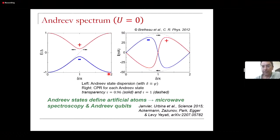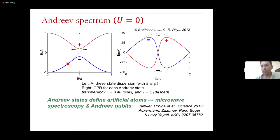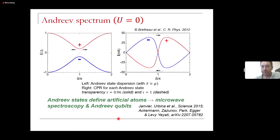On a more general note, Andreev states can be thought of as artificial atoms. Inside the gap you have well-resolved discrete energy levels at a given phase difference. You can tune these energy levels by changing the phase difference, and you can induce transitions between such levels by microwave spectroscopy. You can even build qubits out of them, and it has been shown that these have really long lifetimes and very good properties — so they might become a leading candidate for quantum computing.